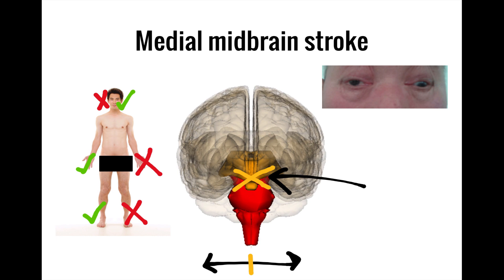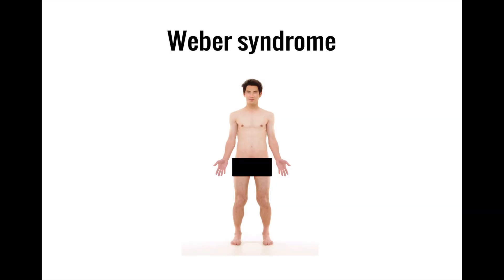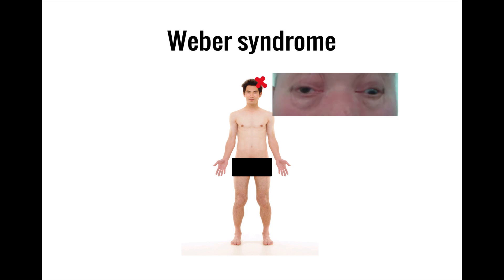The condition most classically associated with a medial midbrain stroke is called Weber syndrome. Weber syndrome involves the combination of an ipsilateral oculomotor nerve palsy and contralateral hemiplegia — those are the crossed findings that tell you it's in the brainstem.